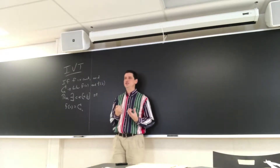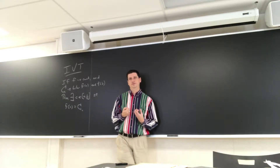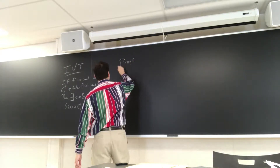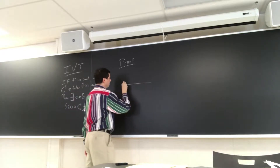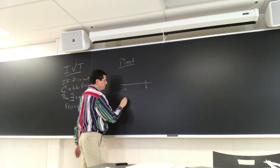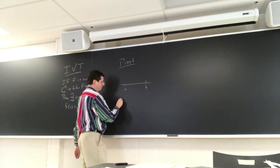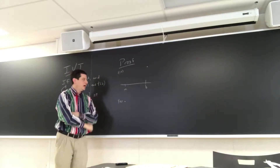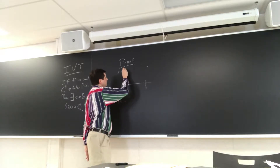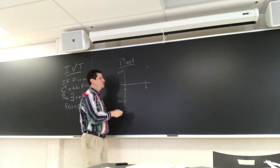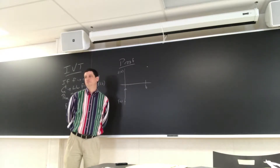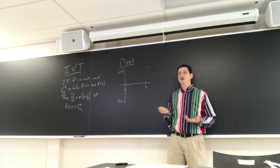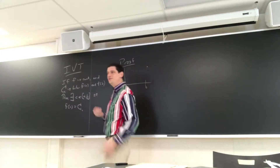How rigorously do you want this proven? I'll sketch a proof — this might remind you of something we've seen before. Here's A, here's B. I'll assume F(a) is down and F(b) is up. Here is the value C. You could study C equals zero, but it really doesn't matter what value we take. Does this remind you of something we've seen this semester? This was divide and conquer.